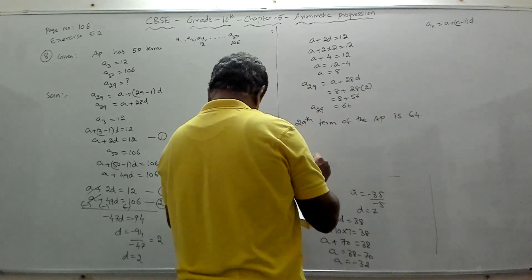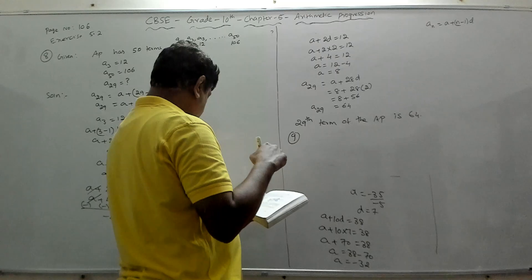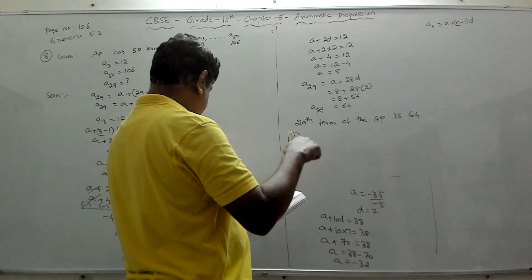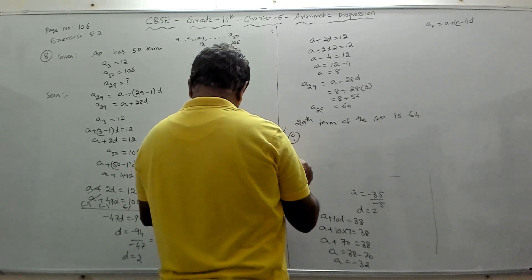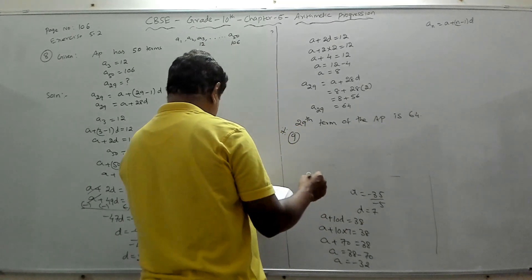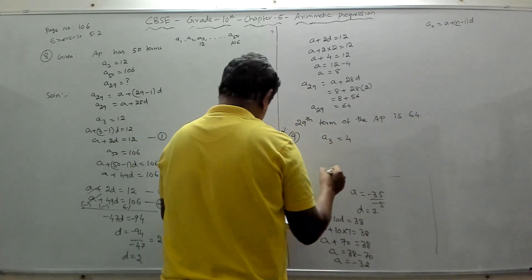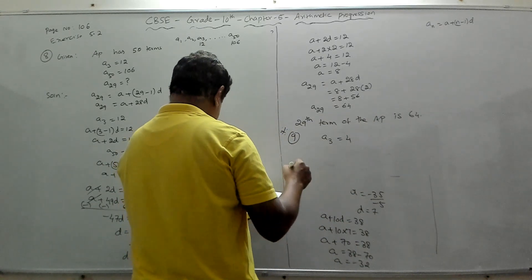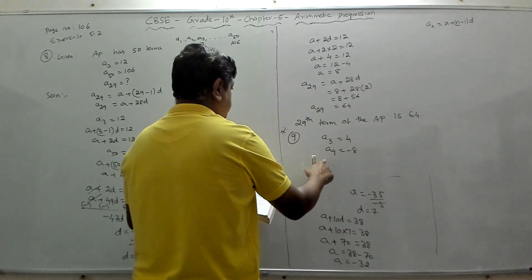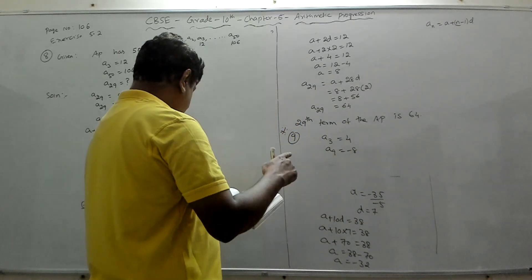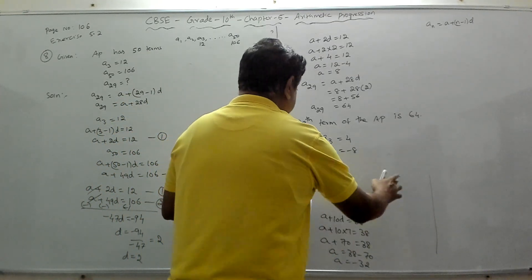Problem 9: if the third and ninth terms of an AP are 4 and −8 respectively, which term of this AP is 0? The third term is 4, so a3 = 4. The ninth term is −8, so a9 = −8. Which term equals 0?